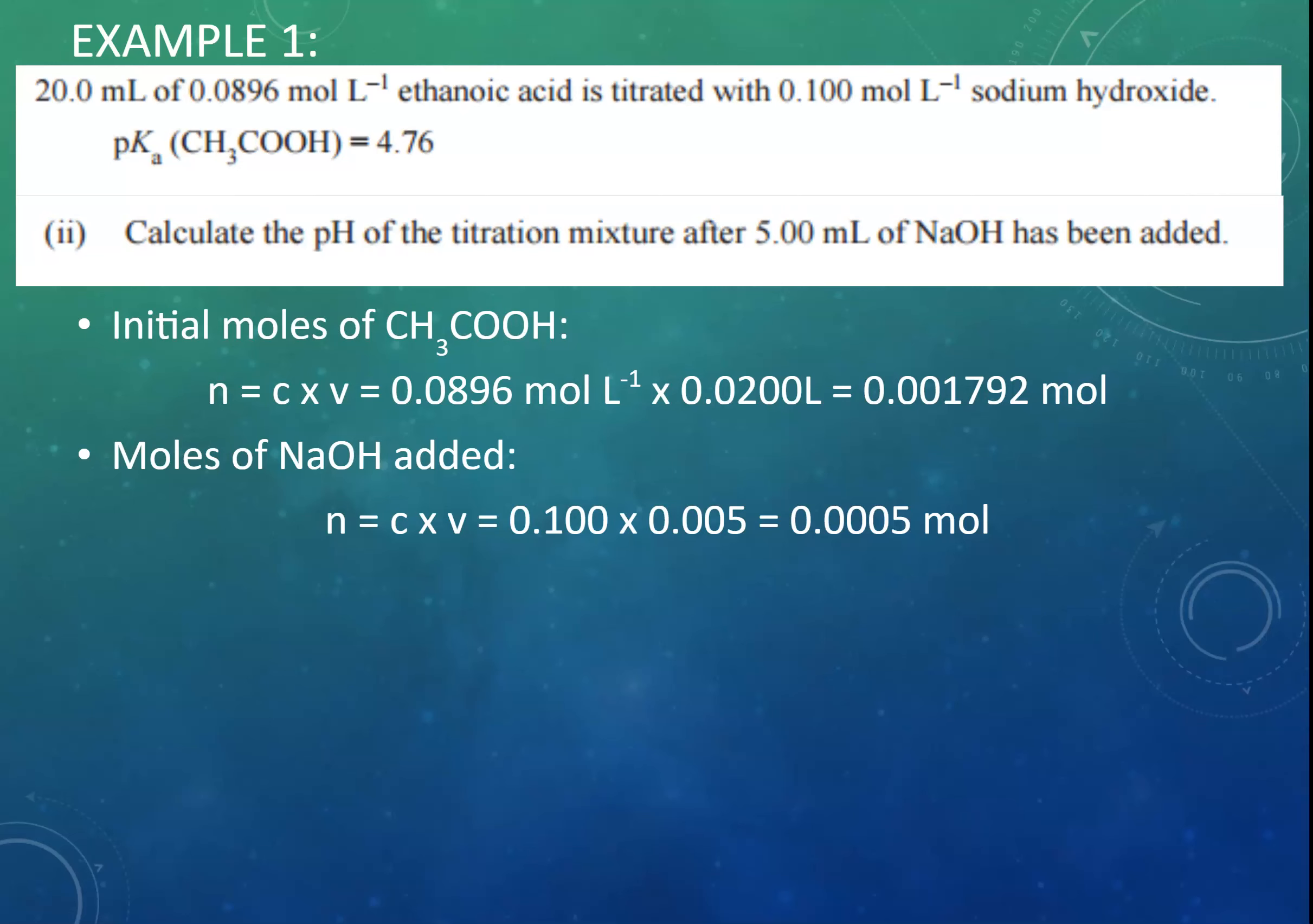We have added 5 mL of sodium hydroxide, and so we can calculate how many moles of sodium hydroxide we've added. Now, as we do that, as we add the sodium hydroxide to the ethanoic acid, some of the ethanoic acid is going to react with the sodium hydroxide. The sodium hydroxide is all going to react, because that's going to get used up. As we're adding it, it's reacting. So, as we're adding it, it's taking away some of the ethanoic acid and replacing it with sodium ethanoate.